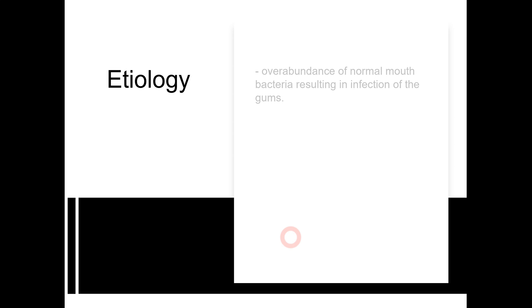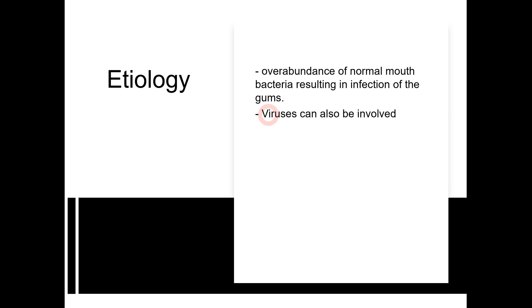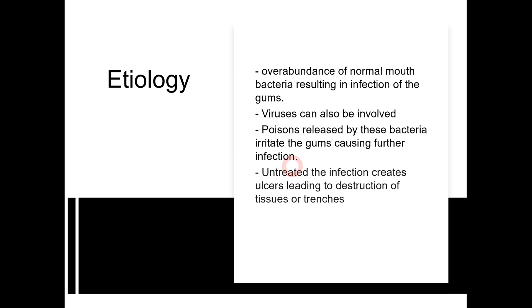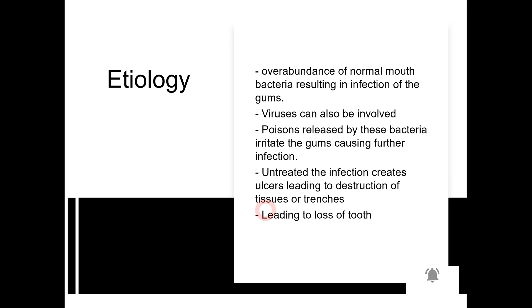Moving on to the etiology — as discussed, different bacteria are involved in causing ANUG, and the underlying systemic condition eventually contributes to its development. Various bacteria are involved in causing this gum infection, and sometimes different viruses are also involved alongside the bacteria. These bacteria and viruses release toxins that irritate the gums and lead to infection. If not treated properly, this infection leads to ulcers that may destroy the underlying gingiva, periodontal ligament, and alveolar bone, eventually leading to tooth loss.